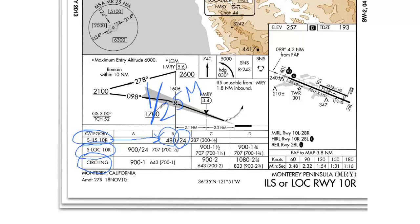The visibility value is the only controlling value that determines whether you can actually execute the approach or not. If the reported visibility is below the minimum visibility value listed on the approach chart, you are not allowed to start the approach. If the visibility is above the minimum value, you are allowed to fly the approach. None of the other ceilings are controlling — only the visibility when it comes to flying an approach.